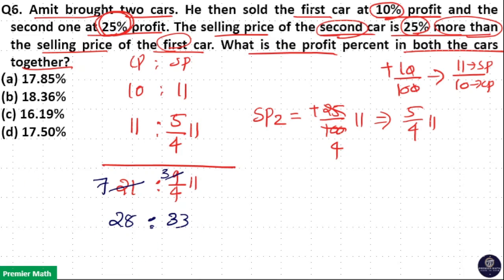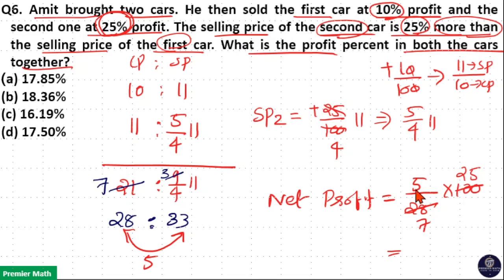If you take the difference, the difference between total cost price and sell price is 5 part. Net profit is equal to sell price minus cost price equal to 5 part. Total cost price is equal to 28 part into 100. 4 goes 7 times in 28, 4 goes 25 times in 100, so 25 into 5 is 125. 125 by 7 is equal to 17.85 percentage. Option A is your answer.